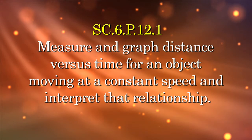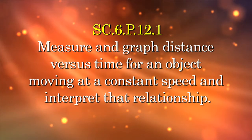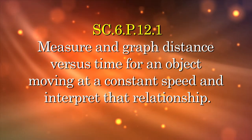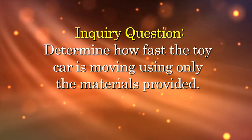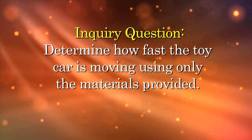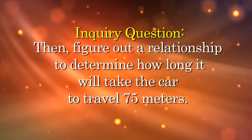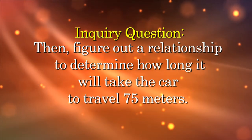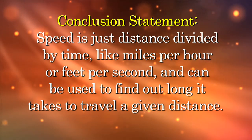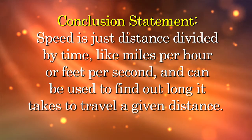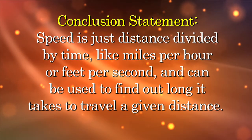The Sunshine State standards associated with this lab will have your students measure and graph distance versus time for an object moving at a constant speed and interpret that relationship. The inquiry question for this lab is: determine how fast the toy car is moving using only the materials provided, then figure out a relationship to determine how long it will take the car to travel 75 meters. The conclusion statement is that speed is just distance divided by time, like miles per hour or feet per second, and can be used to find out how long it takes to travel a given distance.